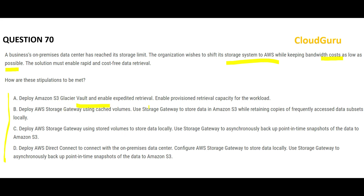Looking at option A — move everything to Glacier Vault and use expedited retrieval. This will not be very cost effective because expedited retrieval is not cheap. Also, you should not put frequently accessed information on Glacier Vault. When operating on-premises, data sets are not just archived — there will be frequently used data sets. Option A does not address how to handle frequently used data sets.